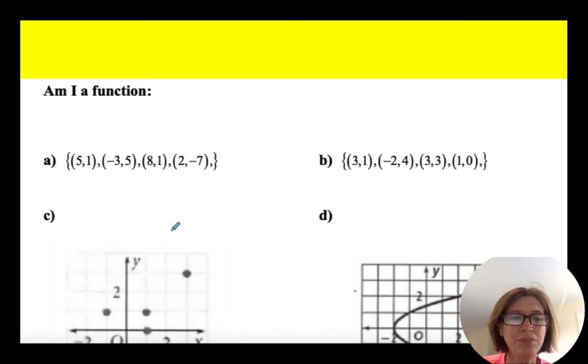So let's try that. So am I a function? Here I have a set of, a relation, a set of ordered pairs. I look at all my x's. I don't see any repeated x's. So I'm good. It's a function. Yes.